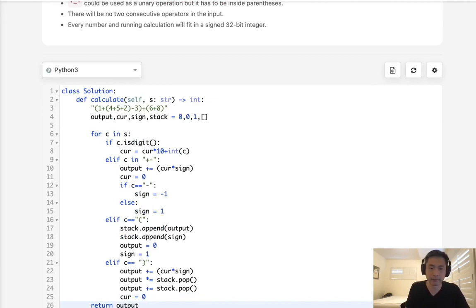Finally, we return our output. But one thing, we also need to add the current times sign here. Because we only finalize our output when we see a closed parenthesis or an operator. We could have, you know, even 1 plus 1 here. That last 1 wouldn't be added. So, we'd have our current number here and our sign. So, we'll just add it at the very end. And that should be it. So, let's make sure this works.